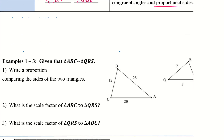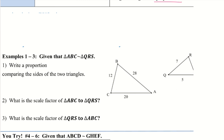Let's get into examples 1 through 3. Given that triangle ABC is similar to triangle QRS, we want to write a proportion comparing the sides. So starting with the first two letters: AB over QR. And we continue through the whole triangle — BC over RS. And then AC over QS. Those are all of our proportions for these triangles.